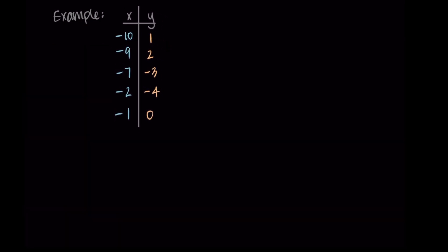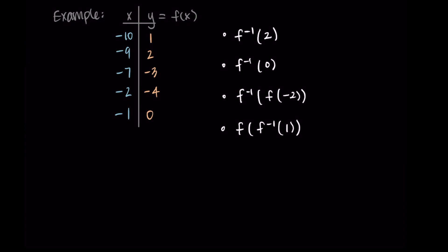Now that we've identified a one-to-one function, let's use table B to answer more questions. We'll call B my function f, which takes in an x value and gives a corresponding y value or f(x). We want to find: f inverse of 2, f inverse of 0, f inverse of f(−2), and f of f inverse of 1. Starting with f inverse of 2, the inverse function looks at the outputs of the original function and asks which input corresponds to the output of 2.